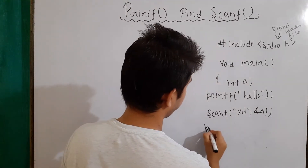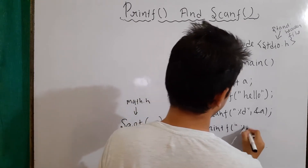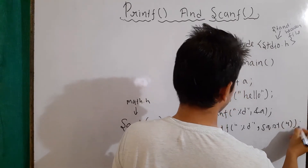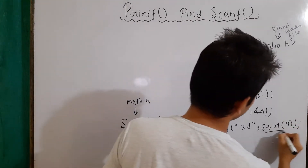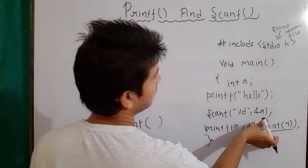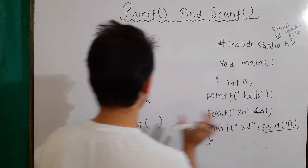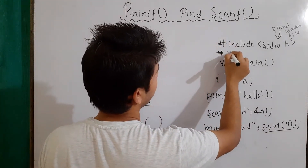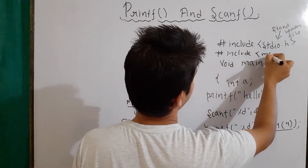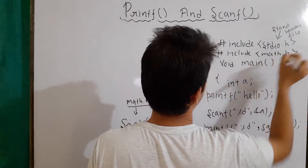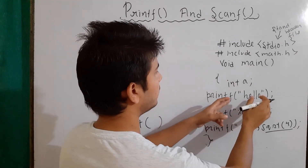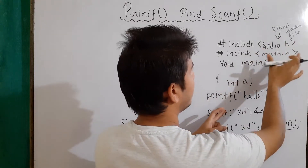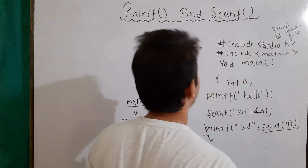Let's say I'm writing printf of %d and then sqrt(4). Now I'm using this built-in function, so where is the prototype? The prototype is defined in the math.h file, so I have to include it by writing #include math.h. Any built-in function I'm using must have a prototype, and prototypes are generally defined in the standard header file. That's why we include these files.